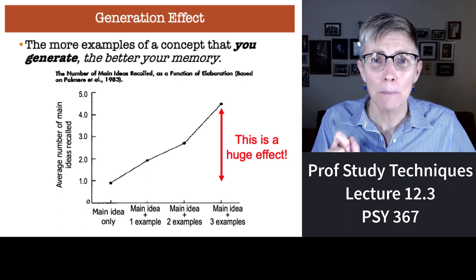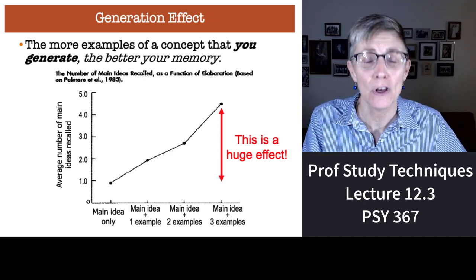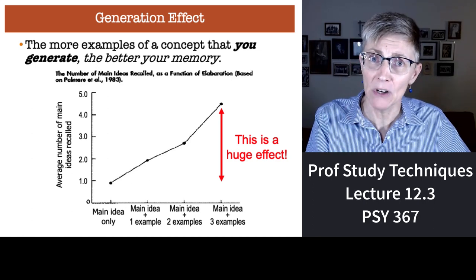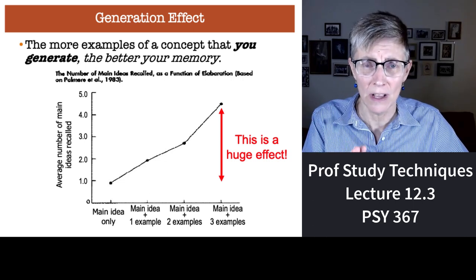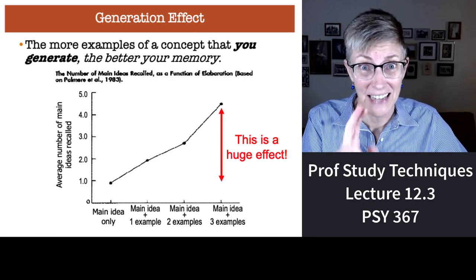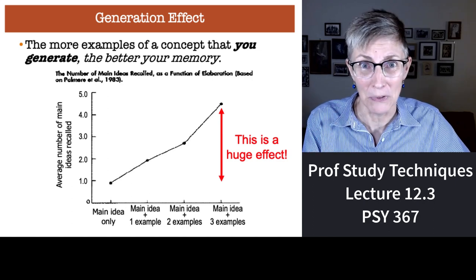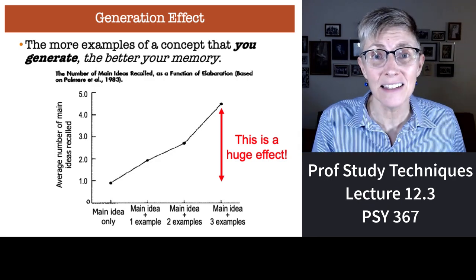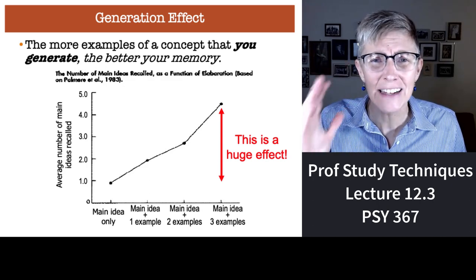That's a 400% improvement in memory if you generate three examples over just remembering the main idea. Students who just memorize the concepts are not going to do nearly as well as students who understand the concept and generate two or three examples of it. They're taking advantage of the generation effect and their memory for the concept skyrockets four times. These effects are ginormous.